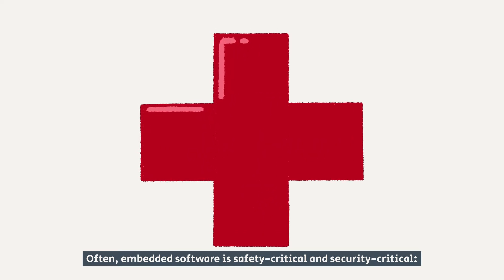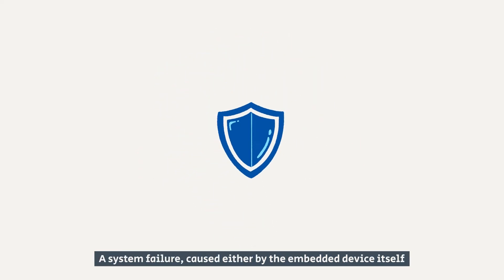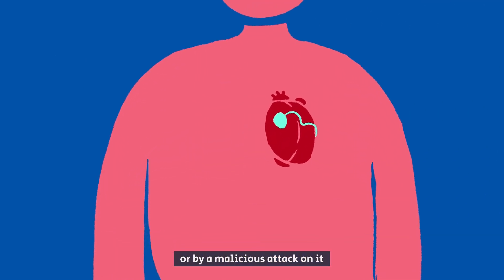Often, embedded software is safety-critical and security-critical. A system failure, caused either by the embedded device itself or by a malicious attack on it, can cause severe harm to human beings.